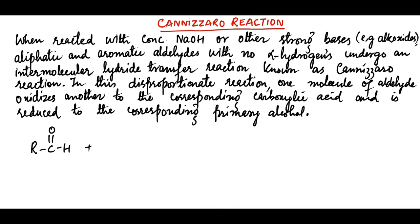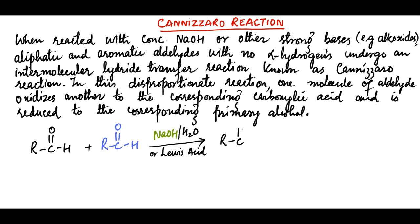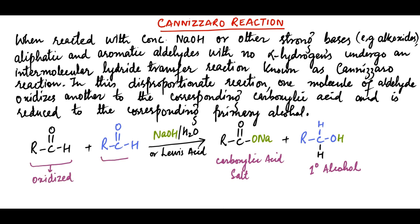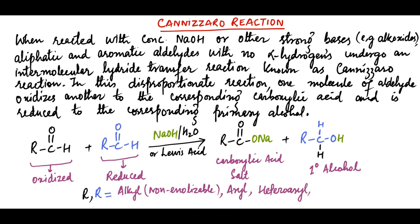Consider for example the reaction of this aromatic aldehyde in the presence of sodium hydroxide or Lewis acid. Since both aldehydes are the same, to understand which is oxidized and which is reduced, we write these in different colors. The products obtained are carboxylic acid salt and primary alcohol. Thus the black one is oxidized and the blue one is reduced. The alkyl group can be non-enolizable alkyl, aryl, heteroaryl, or H in case of formaldehyde.